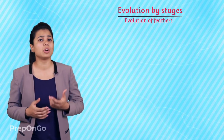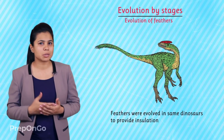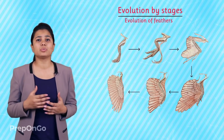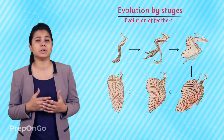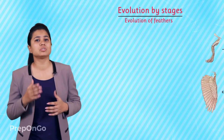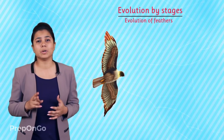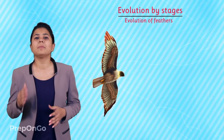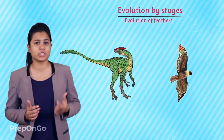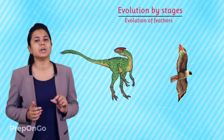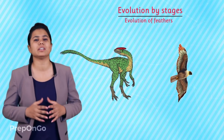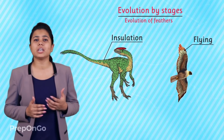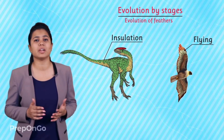Now let's see another example which is the evolution of feathers. Feathers were evolved in some of the dinosaurs to provide insulation to their bodies in cold weather, but later on these feathers got modified for a more useful purpose — flying — and the species evolved from dinosaurs to birds. So in birds feathers served two purposes: first was to provide insulation and the second was to fly. It may be possible that some evolutionary changes in an organism for one purpose become more useful for an entirely different function at a later stage.